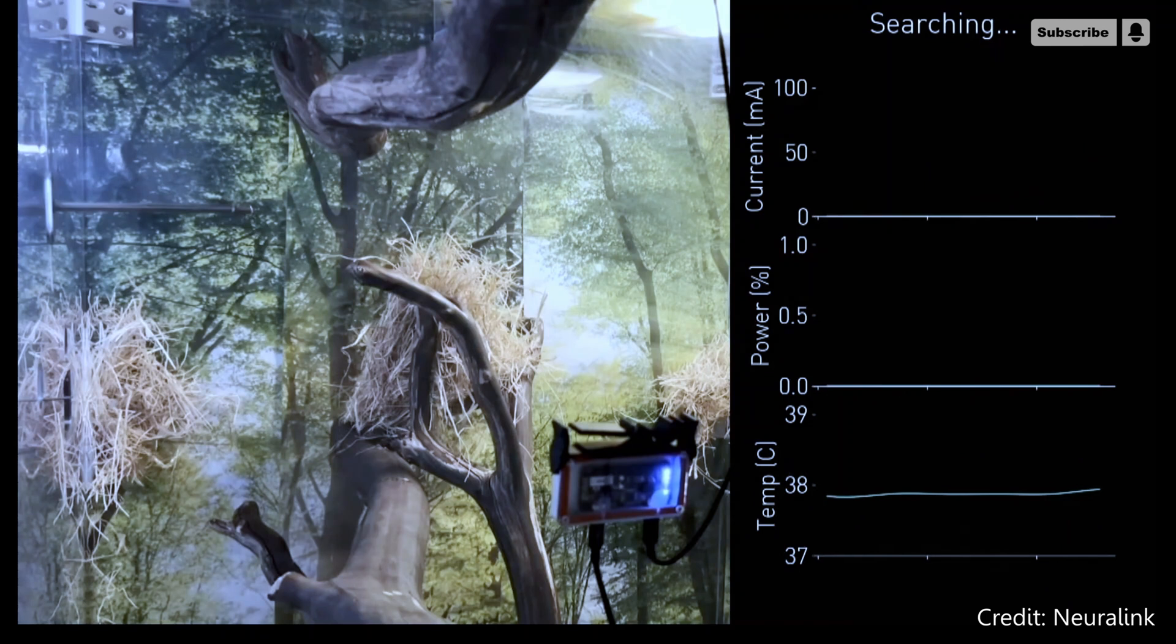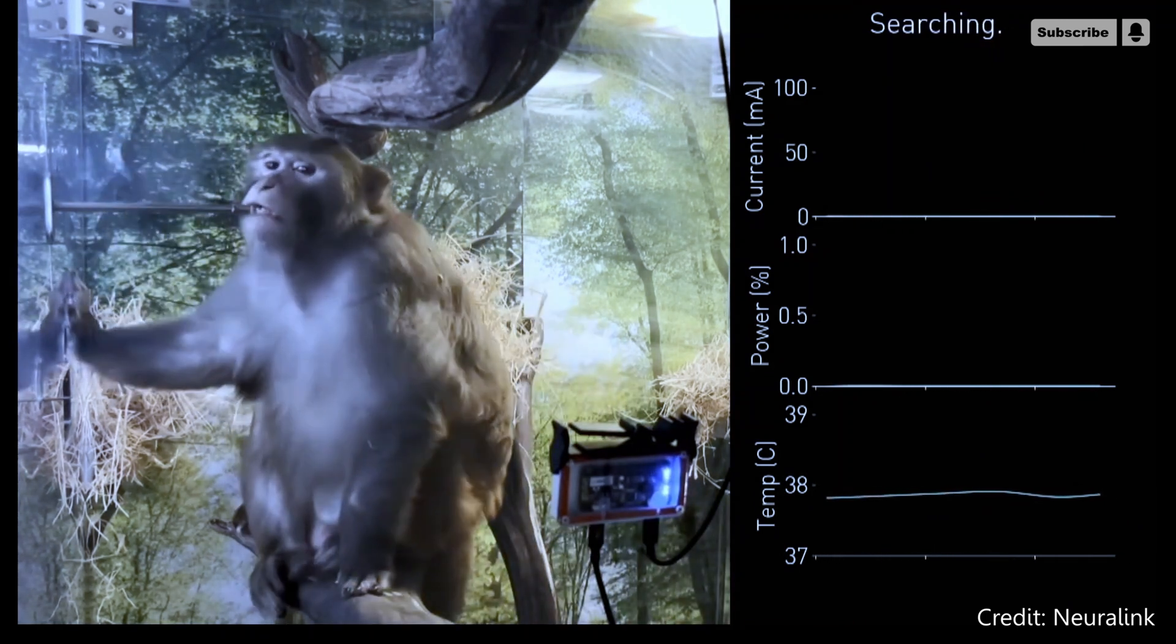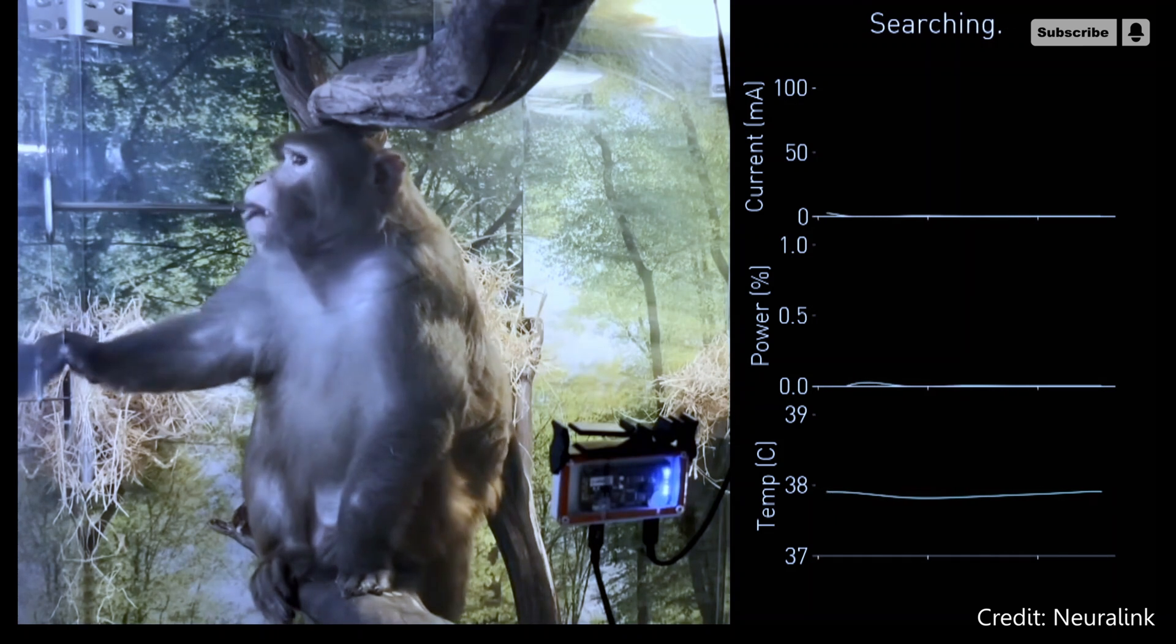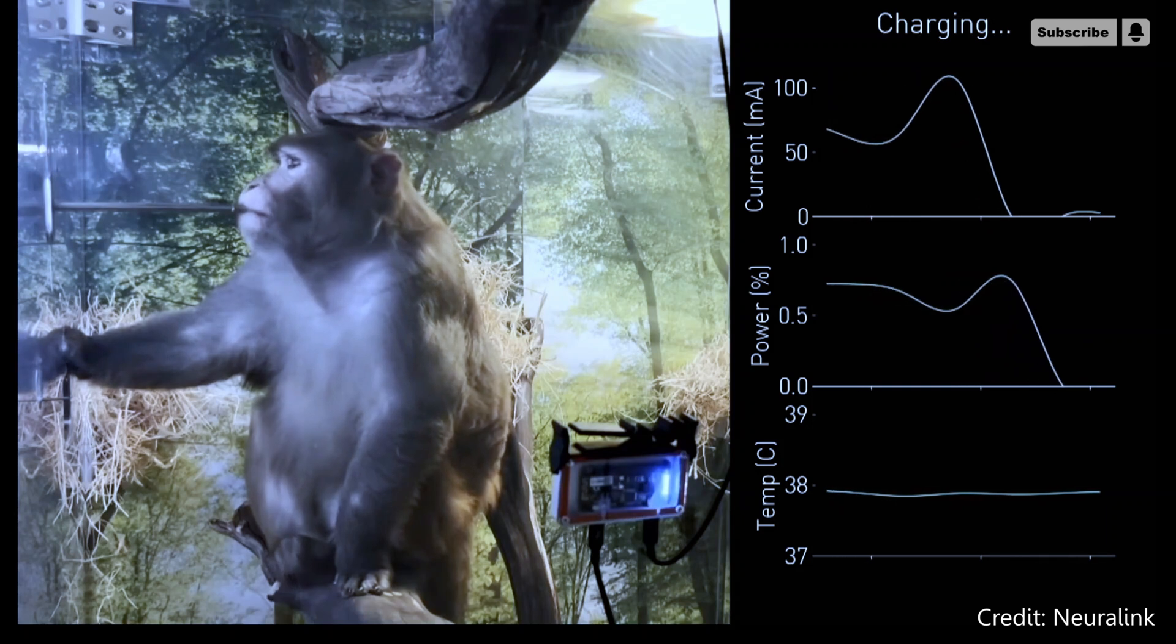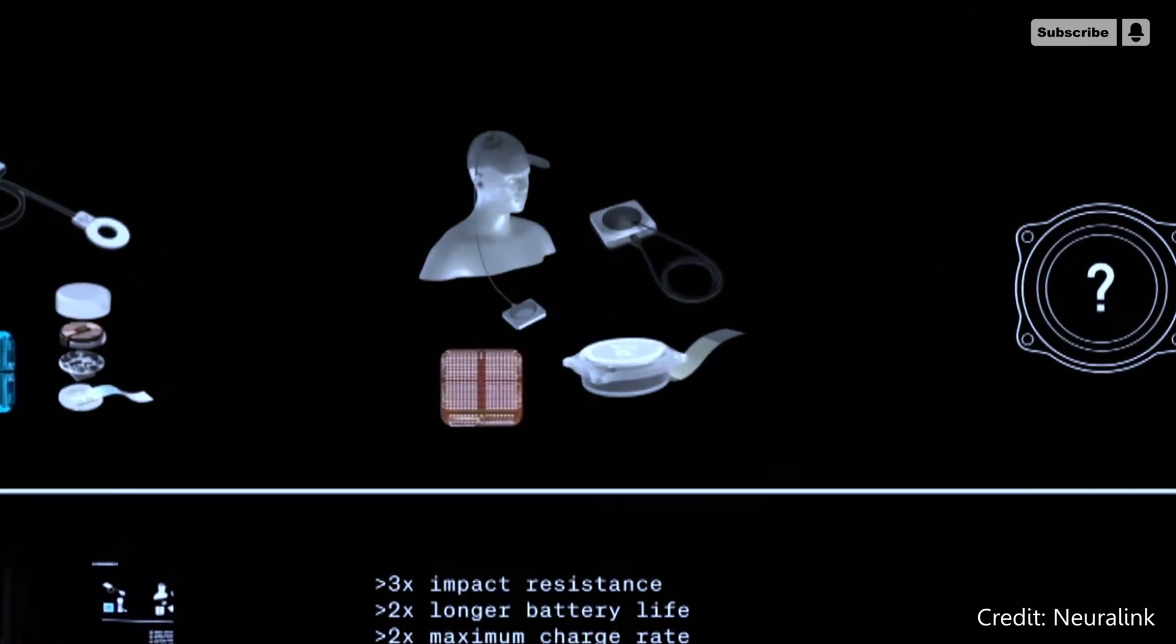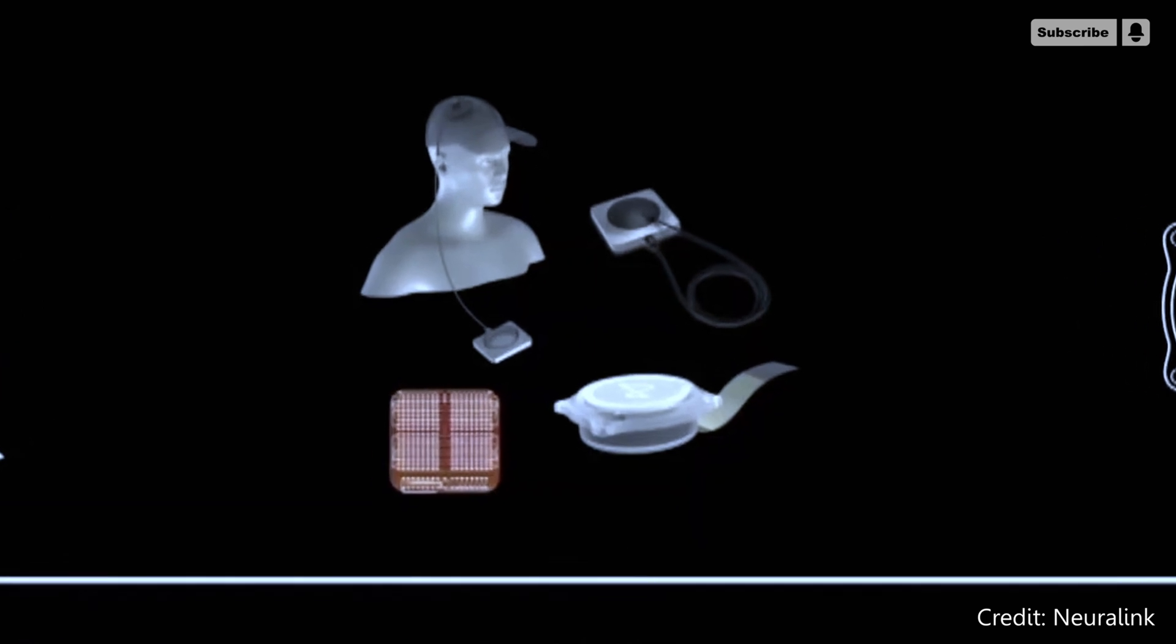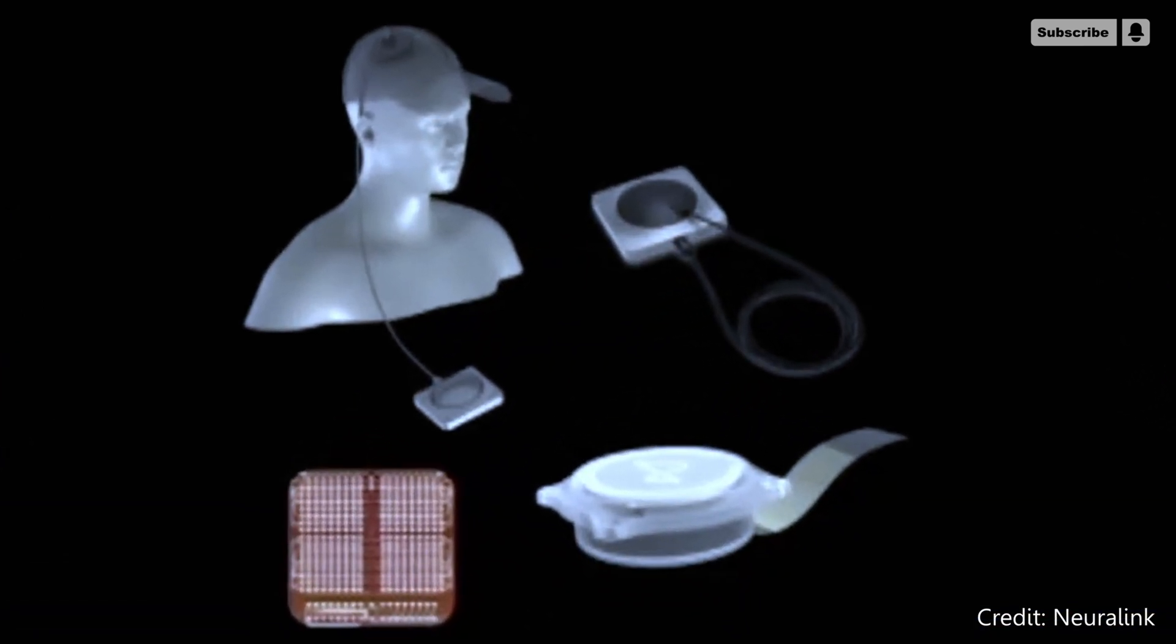Due to the wireless nature of Neuralink's N1 implant, the company has upgraded the battery with a new charger that uses an aluminum battery base with a 6.78 MHz drive circuit to achieve a two-fold increase in battery life over the previous charger. The new charger is also wireless, and Neuralink is already working on their next-generation charger using bi-directional near-field communication.